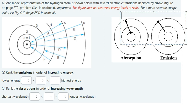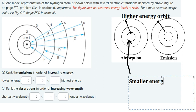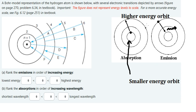We know that the outside of the circle represents the higher energy orbit, and the smaller circle represents the smaller energy orbit. So if an electron goes from higher to lower energy, it will emit a wavelength. If it goes from lower to higher, it will absorb energy from a wavelength in order to move up.